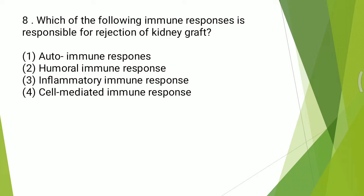The correct answer for kidney graft rejection is the fourth option — cell-mediated immune response.